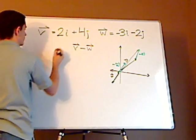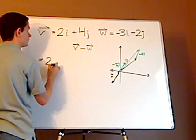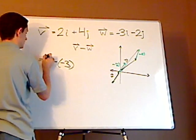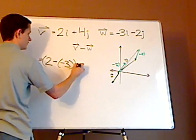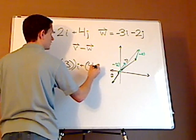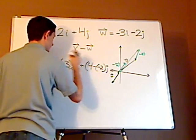So again, this is very straightforward. Just watch out for your negative signs. So this is 2 minus a negative 3. That's the i. And then the j is 4 minus a negative 2. That's your j.